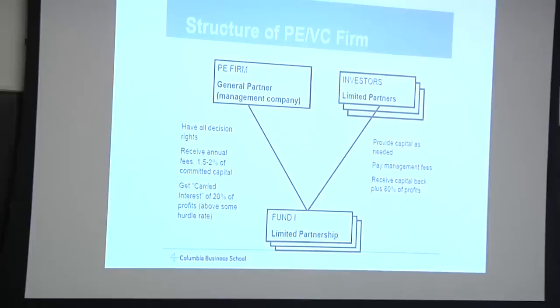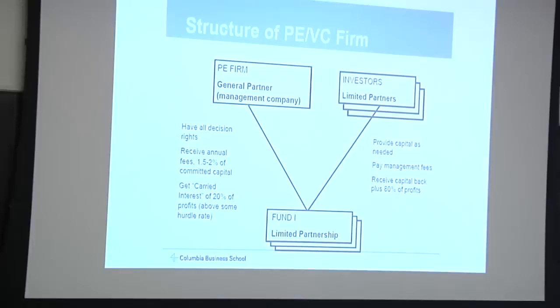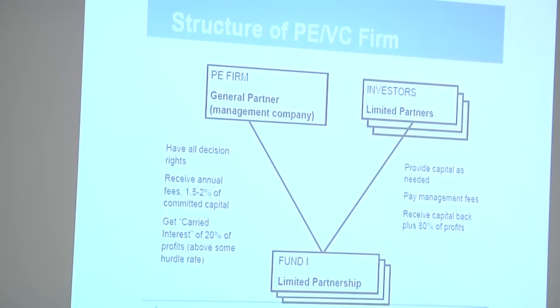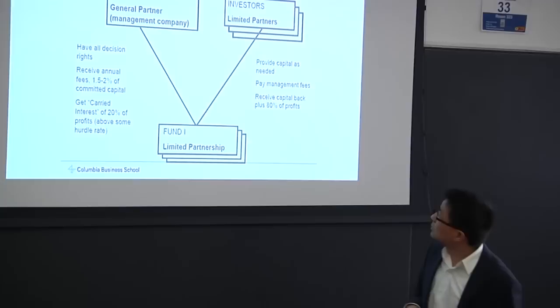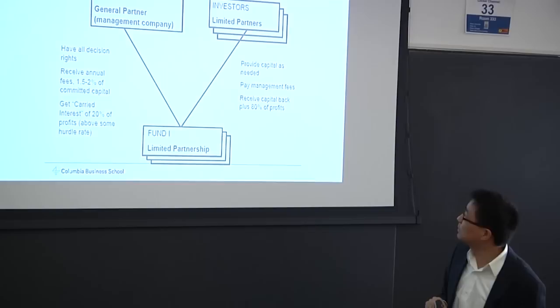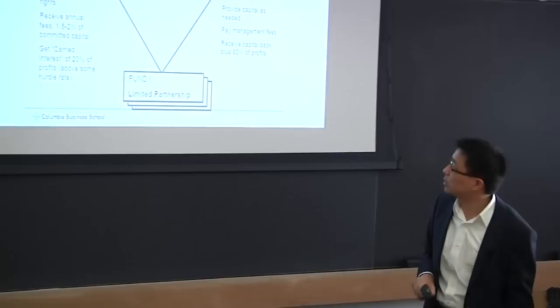This is the basic structure for how the private equity fund works. You have a GP, general partner, who manages the investment. Go find the cheap assets, do restructuring, whatever they're supposed to do to create value. And you have limited partners, like Yale, Stanford endowments, who contribute capital, and various fees get paid because they don't work for free, and they're supposed to create alpha. They set up this limited partnership, meaning liability is limited at the fund level.